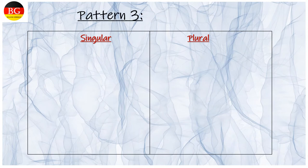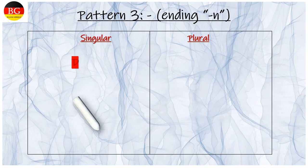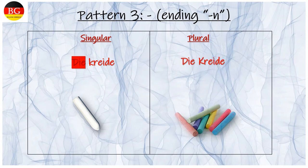Pattern 3: Ending N. Zum Beispiel: die Kreide, die Kreiden. Ending N is getting added.